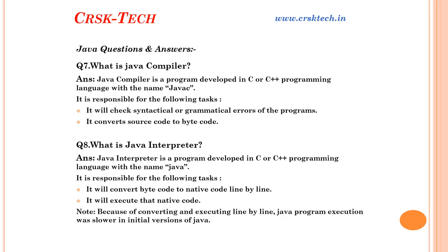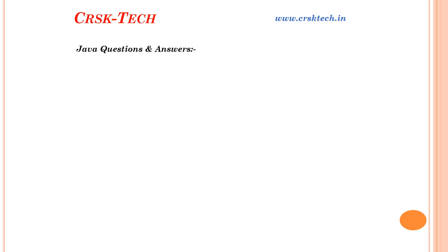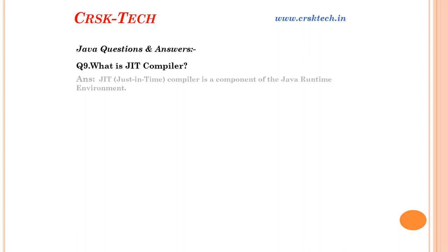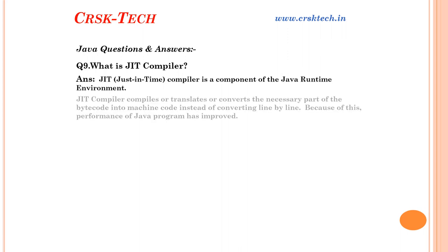Because of converting and executing line by line, Java program execution was slower in the initial version of Java. Question number nine: What is JIT compiler? JIT stands for Just In Time. JIT is a compiler, or we can say it is a component of Java Runtime Environment. JIT compiler compiles or translates the necessary part of bytecode into machine code instead of converting line by line.